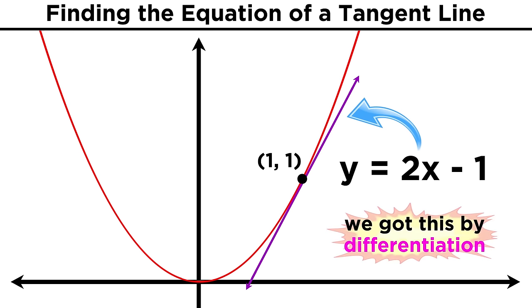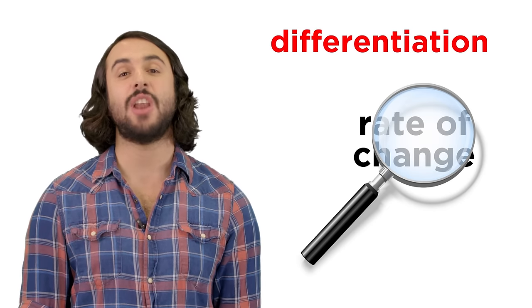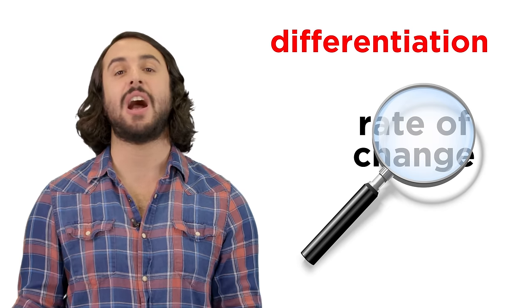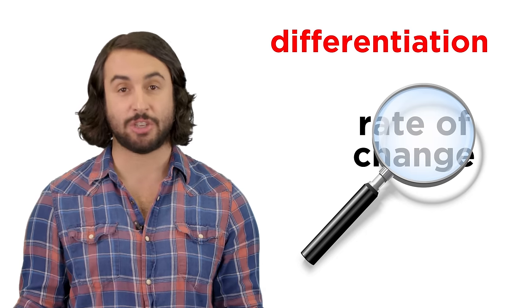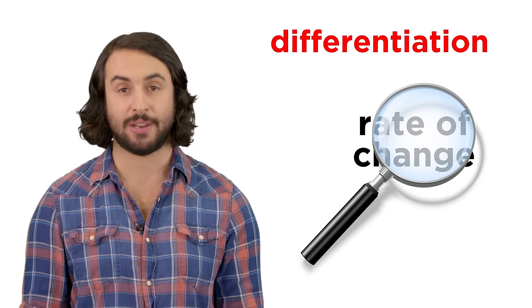In finding the slope of this tangent line, we have performed differentiation, and we have thereby discovered something about the rate of change in this function at this point. Speaking of rates of change, this is another lens we can use to comprehend the concept of differentiation, so let's move forward and examine things from another point of view.